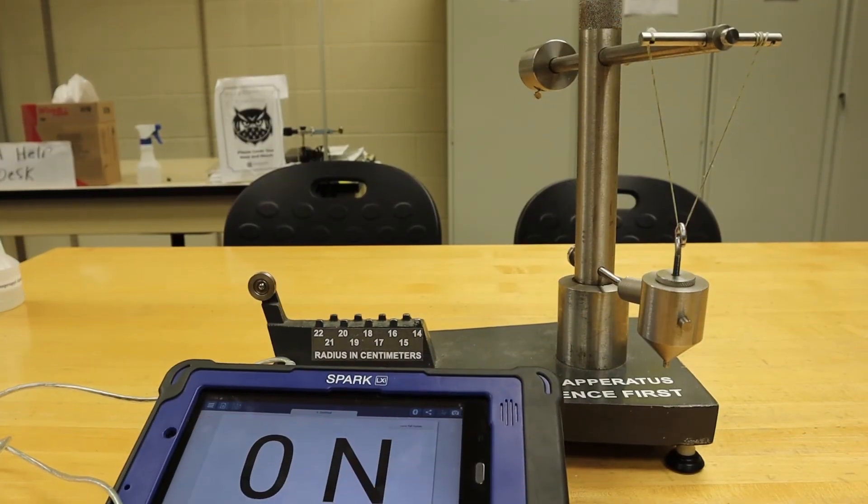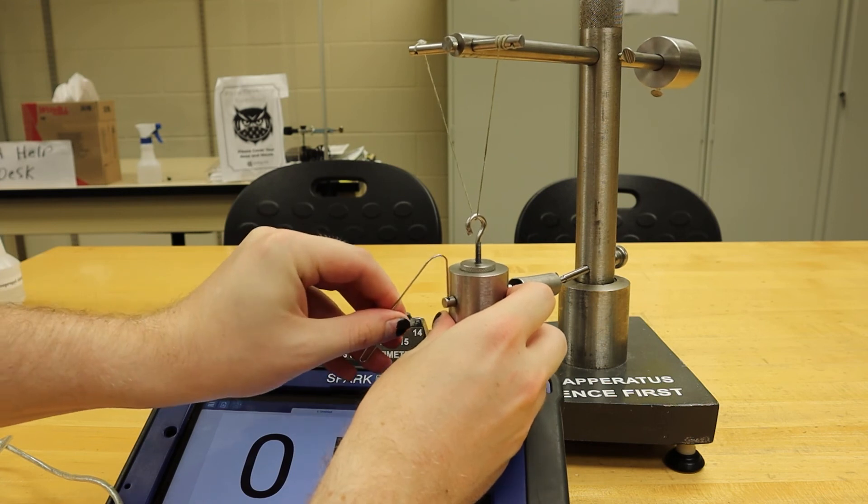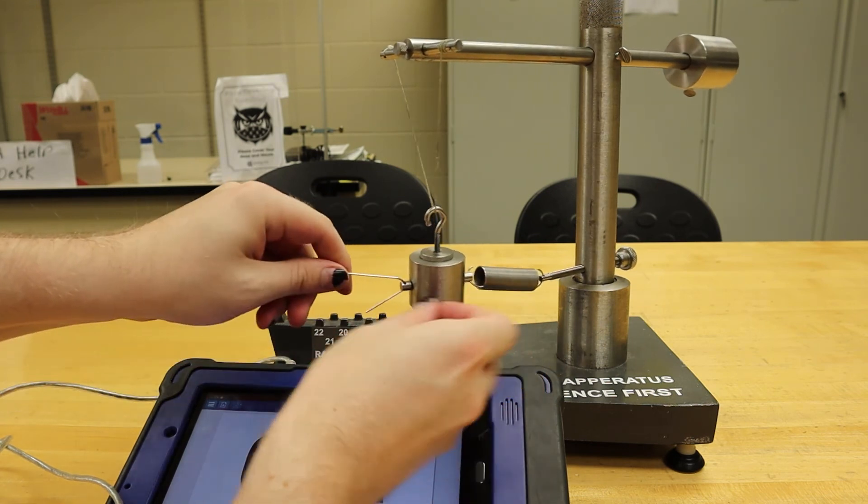We will now use the force sensor to determine the amount of force it takes to pull the bob to the second radius we chose.